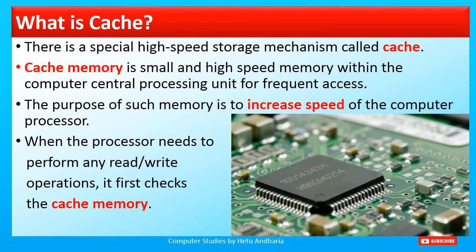The last topic of this video is cache memory — note the correct pronunciation is 'cache,' not 'catchy' or 'catch.' Cache is a high-speed storage mechanism found in smartphones, personal computers, and laptops. Cache memory is a small, high-speed memory within the computer's central processing unit for frequent access. Its purpose is to increase the speed of the processor — when the processor needs to perform any read or write operation, it first checks the cache memory.